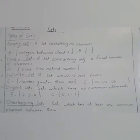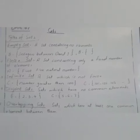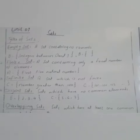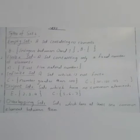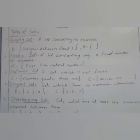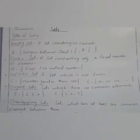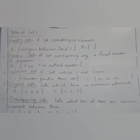Finite set. A set containing only a fixed number of elements. A is equal to first five natural numbers. A is equal to 1, 2, 3, 4, 5. Set A has fixed number of elements. Number 3, infinite set. A set which is not finite. A set whose number of elements is not countable is an infinite set. C is equal to number greater than 100.